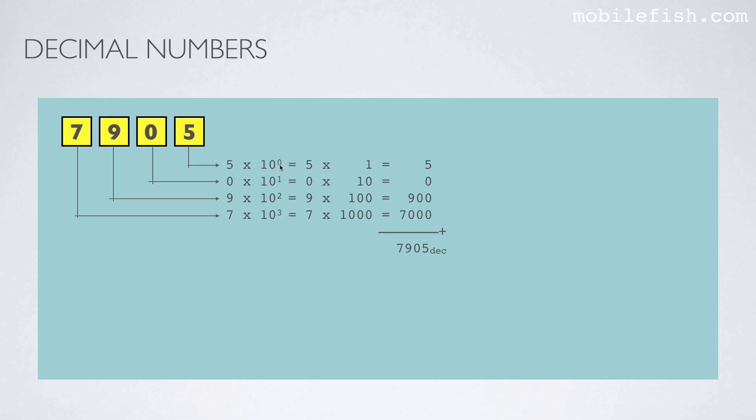So 5 times 10 to the power of 0 is 5 times 1 is 5. 0 times 10 to the power of 1 is 0 times 10 is 0, etc. When you do all the calculations and add these values up, as you can see over here, it is the same.